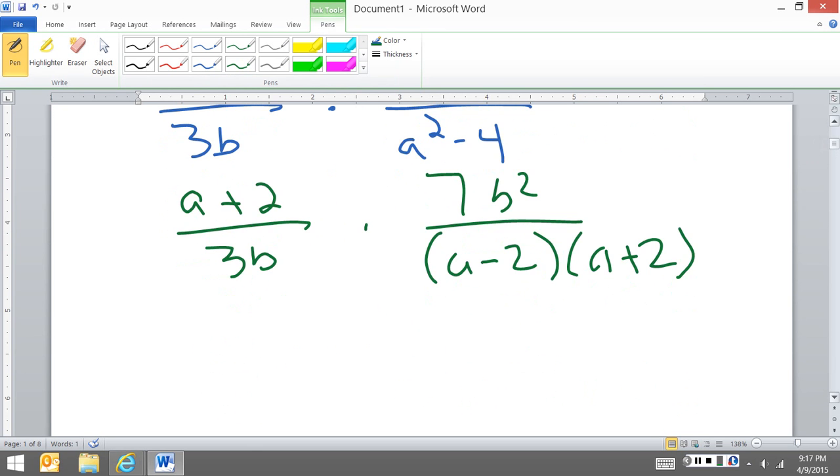Now at this point, we're going to multiply straight across. So I have 7b squared times (a plus 2) over 3b.